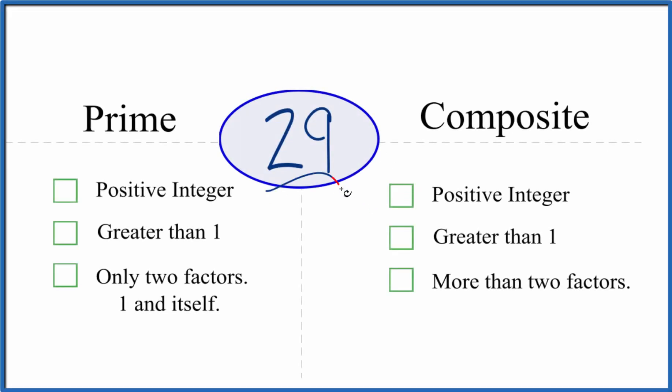How can you tell whether 29 is a prime or a composite number? Well, here's how you do it. Let's first look and see whether 29 is a prime number.